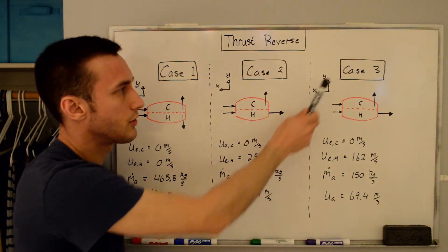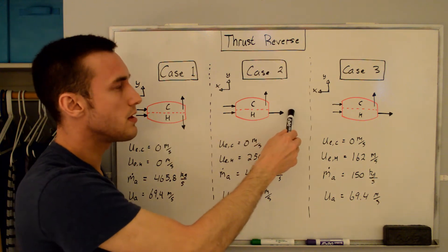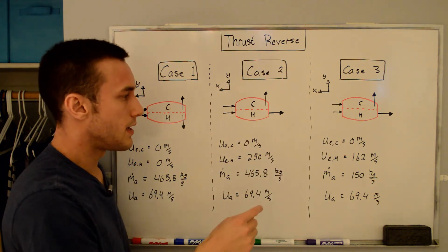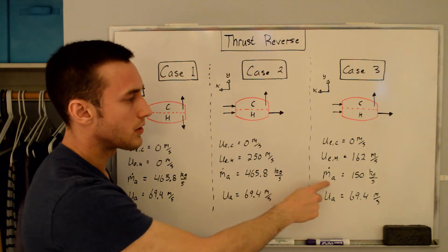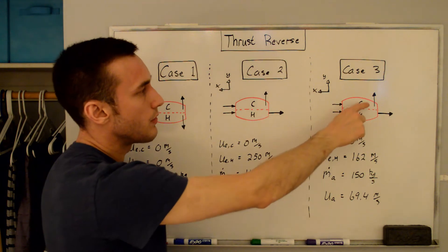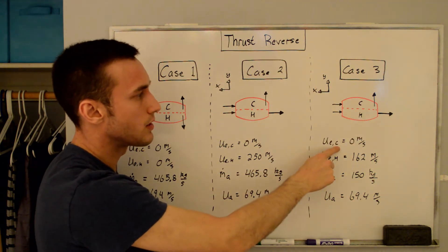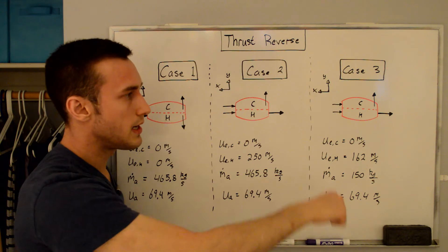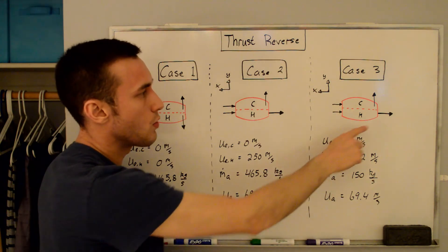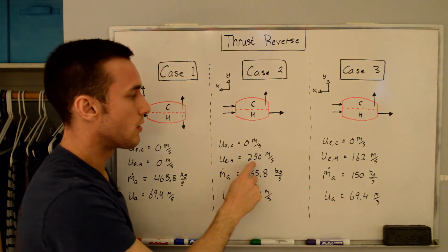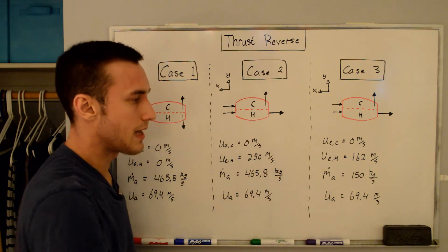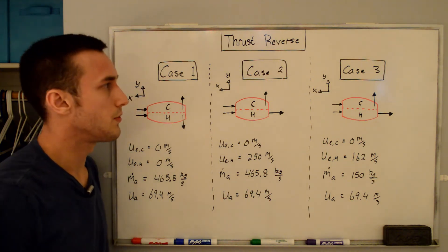The last case, case three, has the same configuration — only the bypass flow is deflected and not the core flow — but now we're reducing the mass flow rate down to idle thrust, giving an M_A of 150 kg/s. The bypass is still deflected 90 degrees so its exit velocity is zero m/s. Since we've pulled the levers back to idle, the exit velocity of the core flow is lower at 162 m/s. The flight speed is still 69.4 m/s.